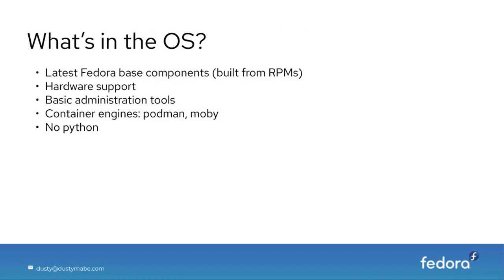Coming soon: more cloud platforms, support for multi-arch, more human-friendly helper functions we want to add to the Fedora CoreOS Config Transpiler, more reliable package layering, improved documentation, and tighter integrations with OKD.